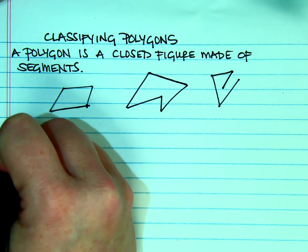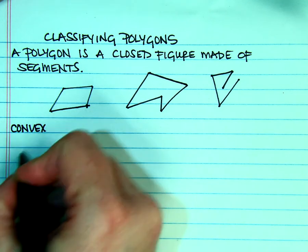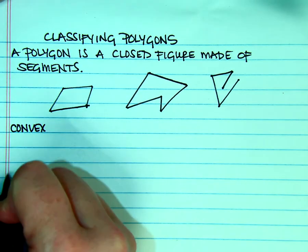We have what are called convex polygons and we have concave polygons.